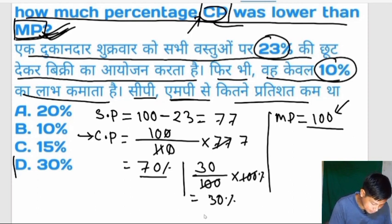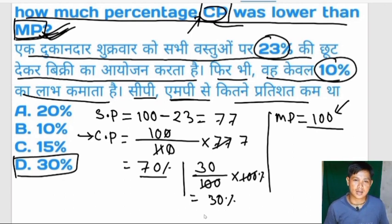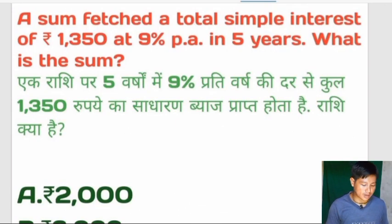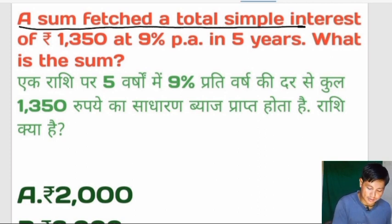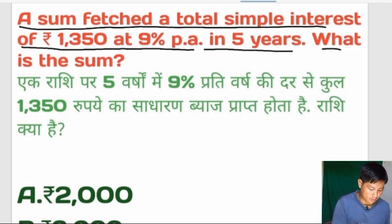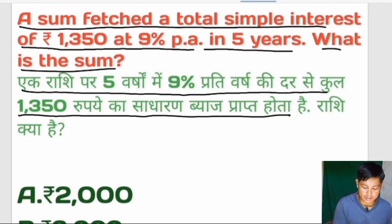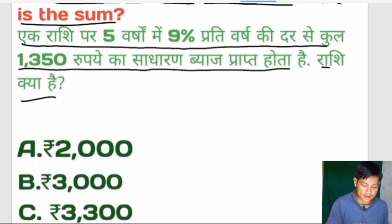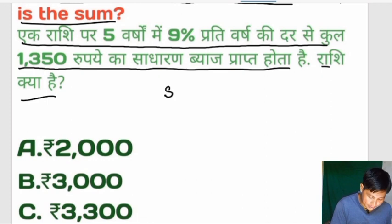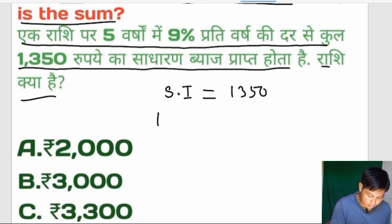This is a total simple interest of 1,350 rupees at 9% per annum. In 5 years, what is the sum?